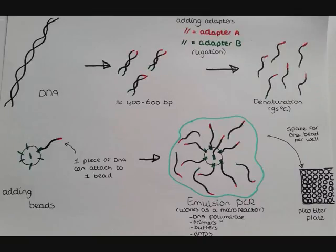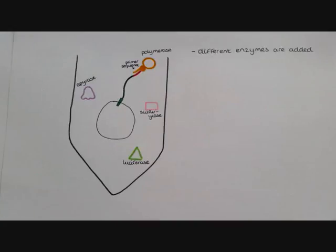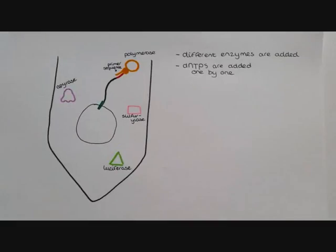Nucleotides are added and pyrosequencing takes place. Pyrosequencing can be done with chemiluminescent enzymatic reactions. Enzymes are present during the first reaction. D-NTPs are added in a stepwise manner.